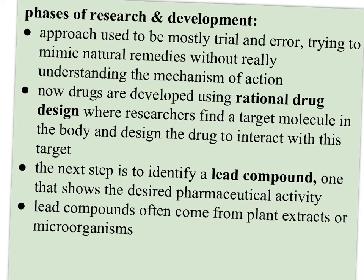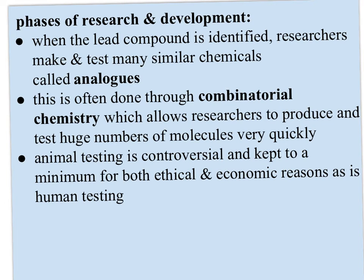The approach used to be mostly trial and error, trying to mimic natural remedies without really understanding the mechanism of action. But now new drugs are developed using rational drug design, where researchers find a target molecule in the body and design the drug to interact specifically with that target. The next step is to identify what they call a lead compound — a molecule that shows the desired pharmaceutical activity. Lead compounds often come from plant extracts or microorganisms. When the lead compound is identified, researchers make and test many similar chemicals called analogs, often through combinatorial chemistry, which lets them produce and test huge numbers of molecules very quickly. The goal is to find a similar chemical with similar results so we don't have to rely on nature to provide it.